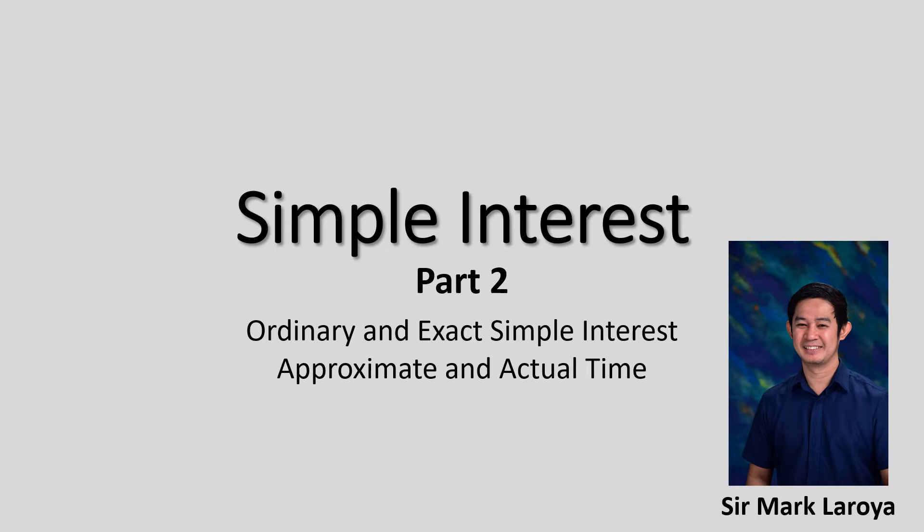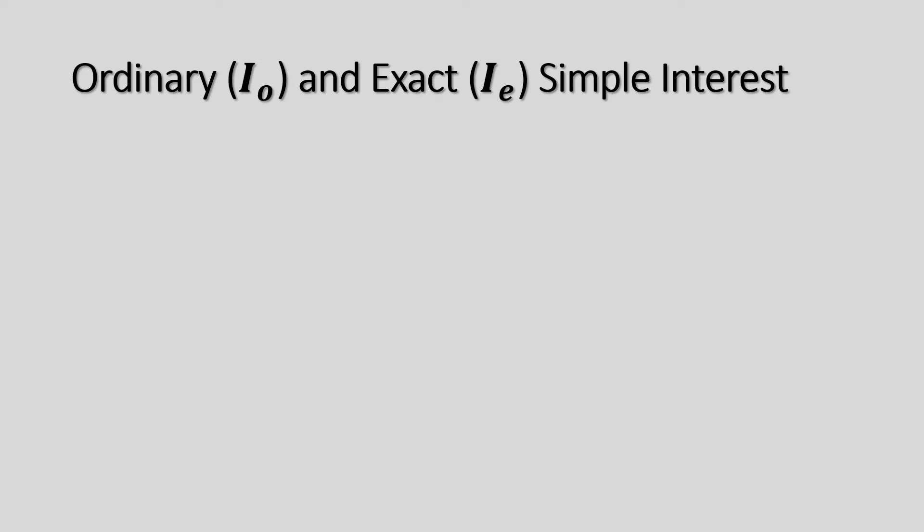I am your teacher, Sir Mark Laroya. There are two types of simple interest: the ordinary and exact simple interest. The ordinary simple interest is denoted by I sub O, and the exact simple interest is denoted by I sub E. Let us now differentiate the two.